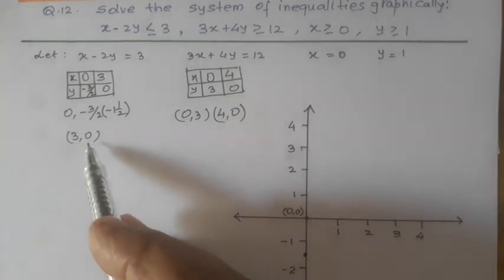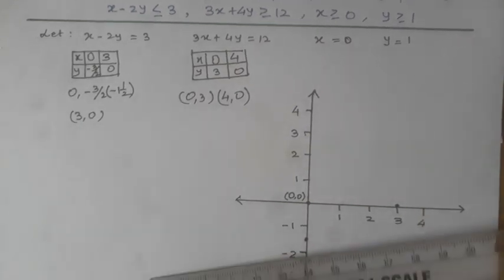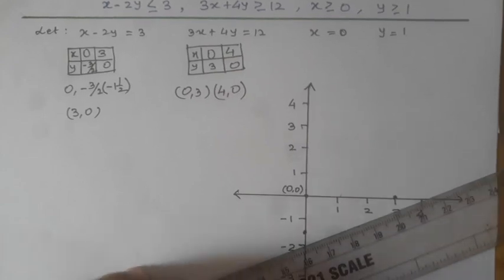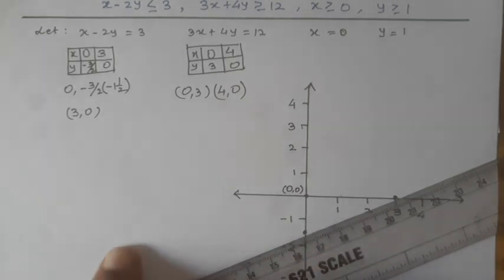And again, 3, 0. 3 on x-axis is here, and 0 means it will remain here. We are joining these points by dark line because all the inequalities have equal marks also, meaning it is a slack inequality.